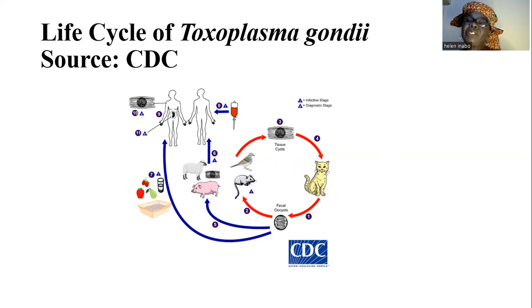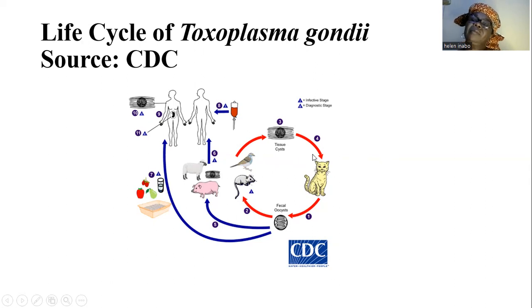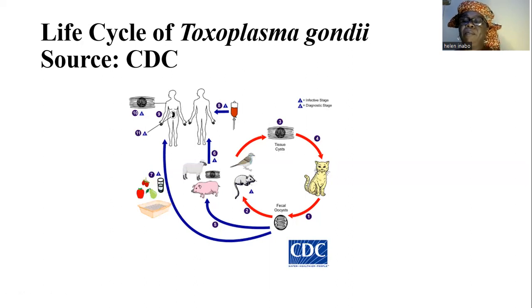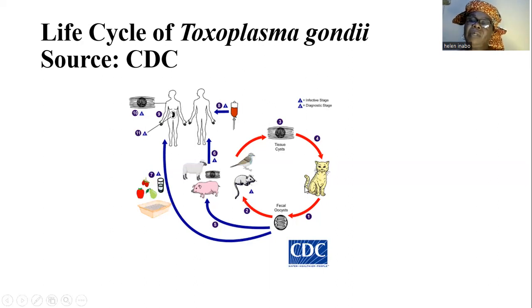When the flesh of these animals is eaten by the definitive hosts, the bradyzoites or tissue cysts are released in the intestine of the definitive host, the cat. That circle is completed.